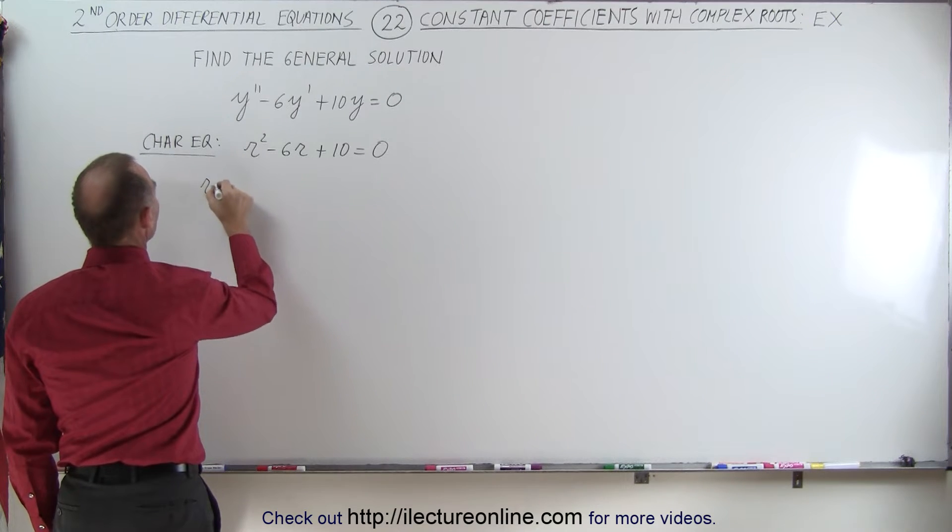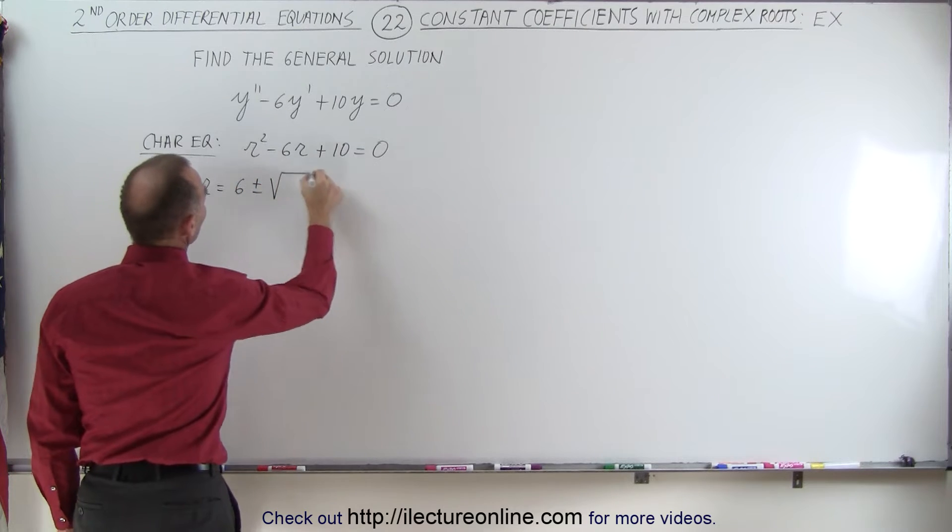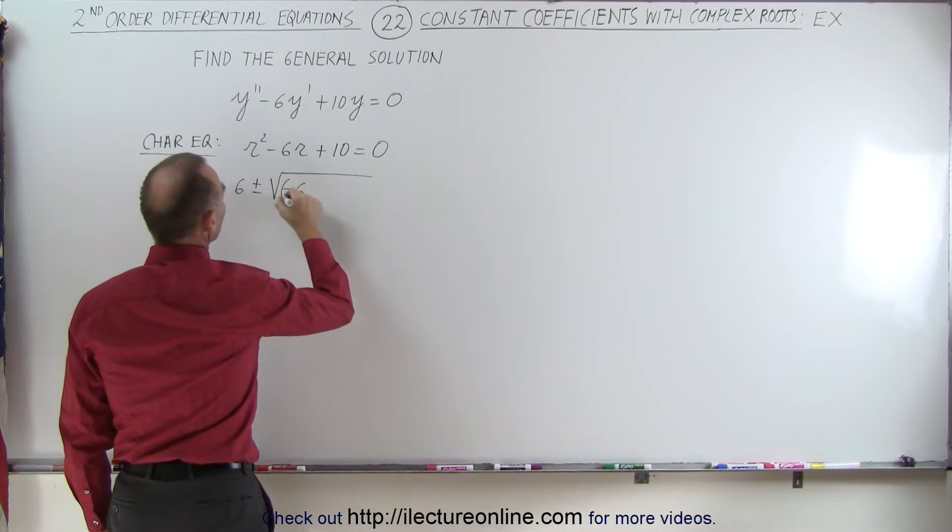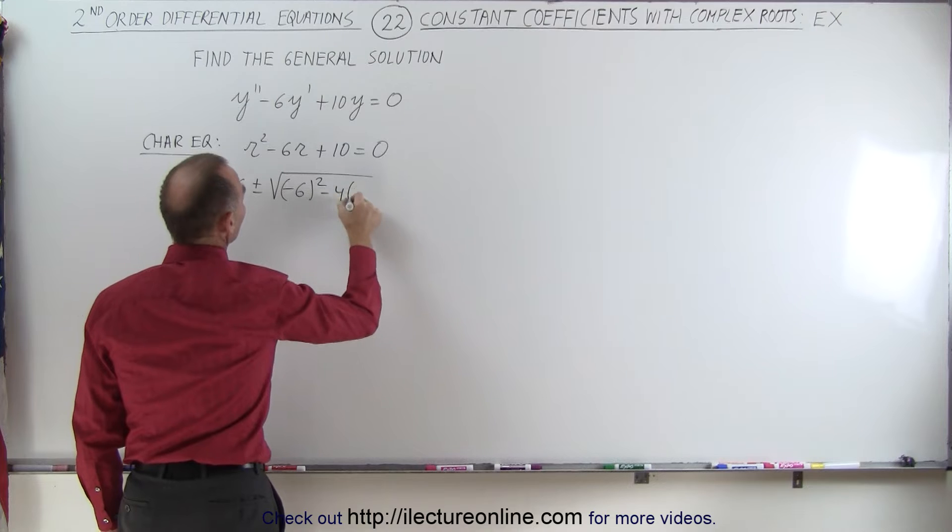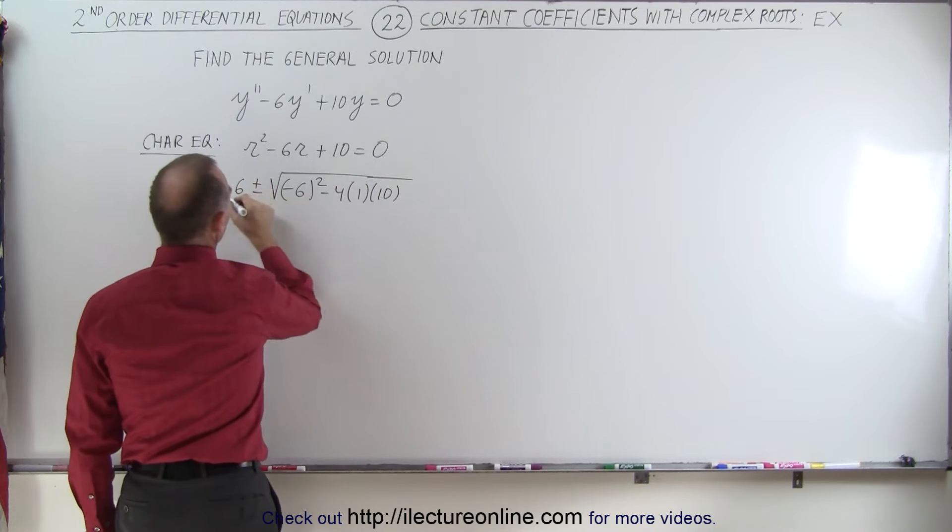We have R is equal to minus B, which is 6 plus and minus the square root of B squared minus 4 times A times C, all divided by 2A.